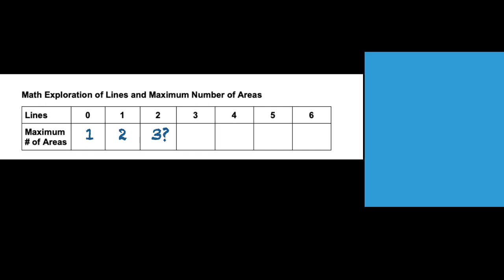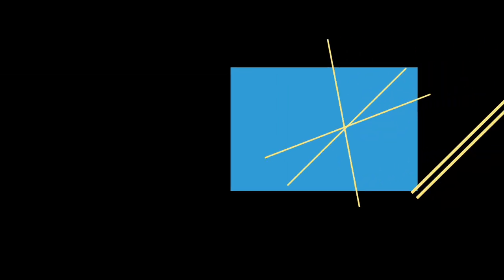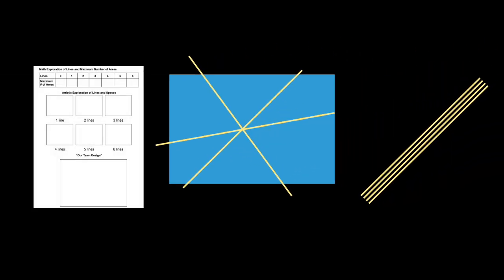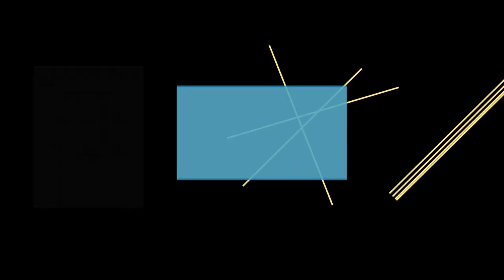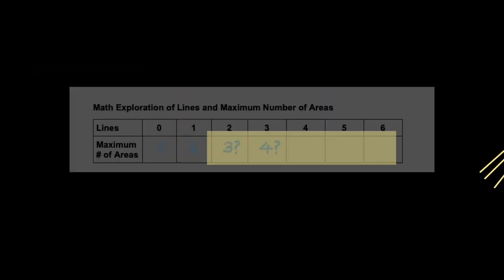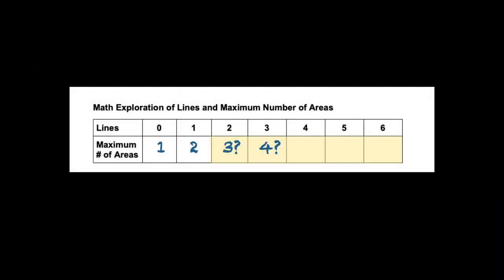You can ask other groups for their ideas if you like. Continue this way, adding lines and looking for the maximum number of areas that you can create. It would be great if this was the pattern, but is it this simple? Write in the number your entire group agrees is the maximum number of areas using zero to six lines.